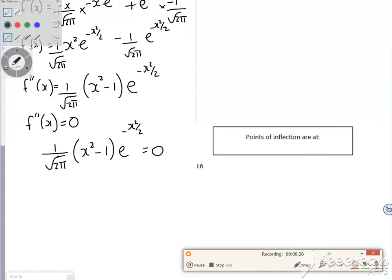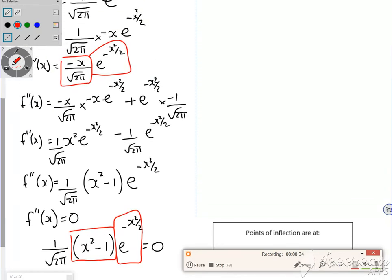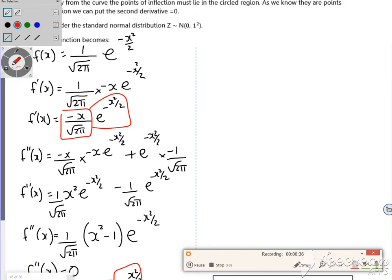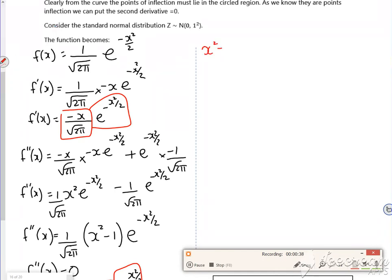e to the minus x squared over 2 is equal to zero. So in terms of my factors, I've got 1 over root 2 pi, I can ignore, it's just multiplying it. So these two bits are what I'm interested in. The x squared minus 1 is equal to zero...